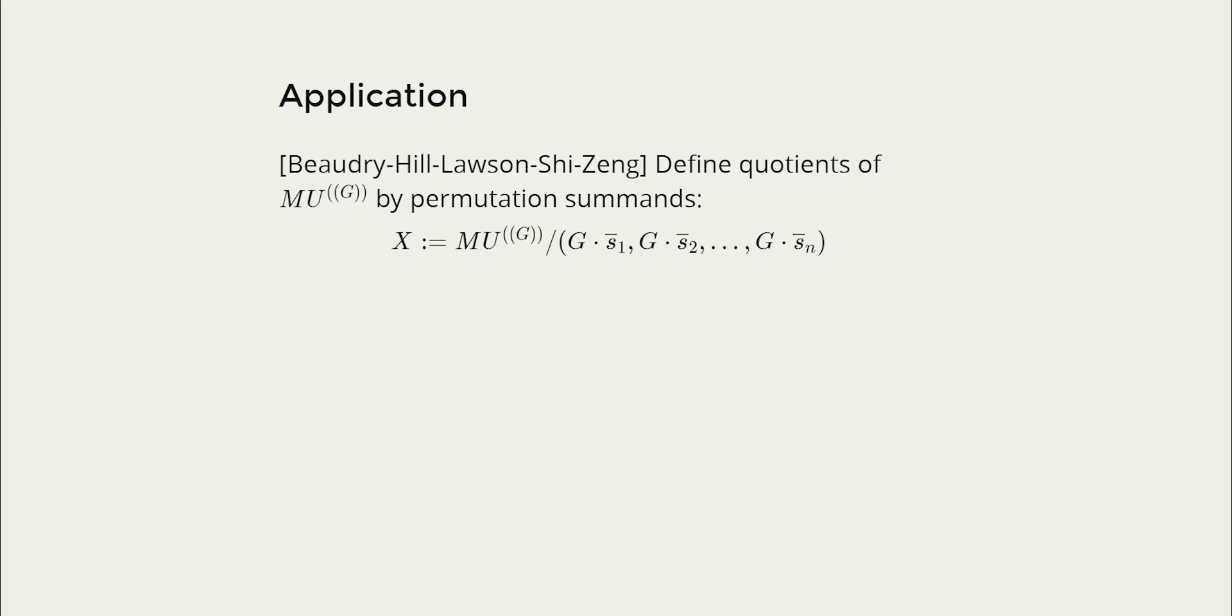Now lastly I just want to give you an application of some of this stuff. So recently Bao, Jui, Hill, Lawson, Xu, Zhang have defined these quotients of norms of MU. They've been looking at these because they've got to do with the equivariant chromatic homotopy story. So you can show that these quotients have the structure of an algebra of those operads and so they've gotten all maps from the previous slide.